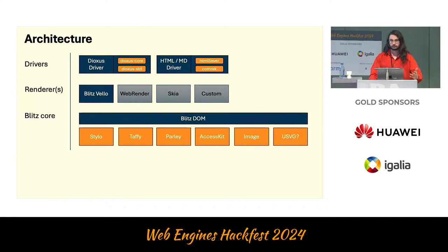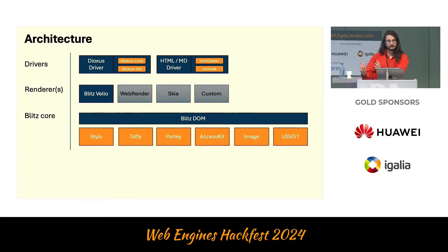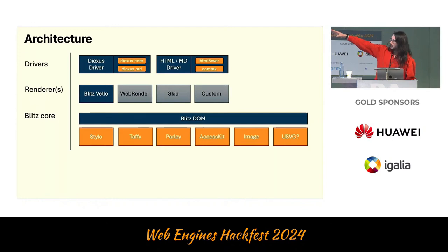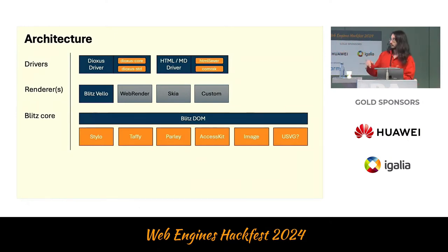The idea is that you should be able to use this engine and bring your own renderer. If you want to render on an embedded platform, or you already have a renderer and just want to build web content in, you can use just that bit. We also have a renderer implemented using Velo, which is a library on top of WGPU. The darker blue indicates what currently exists; the other options — like a WebRender or Skia back end — are things that could be built but don't currently exist.